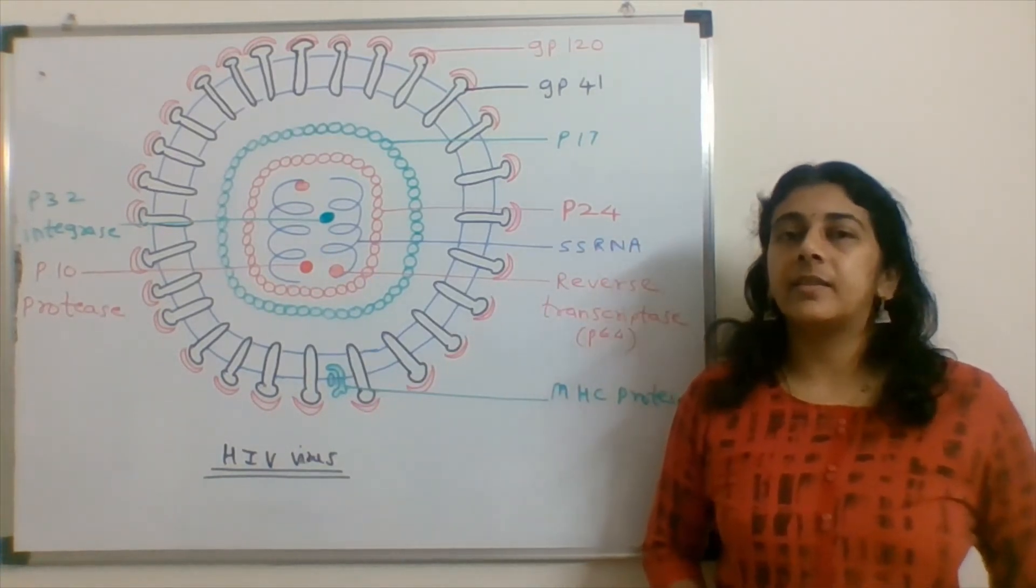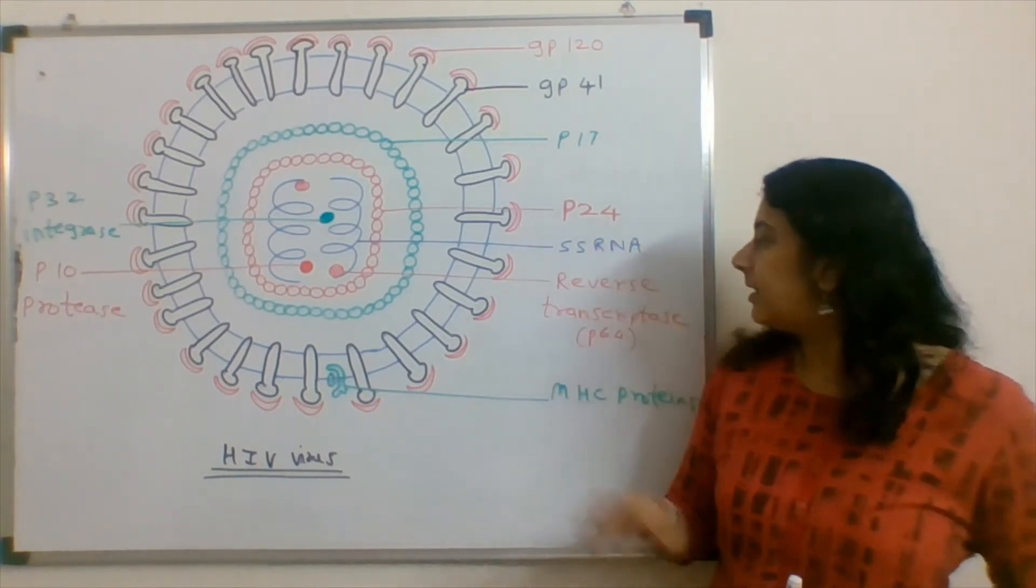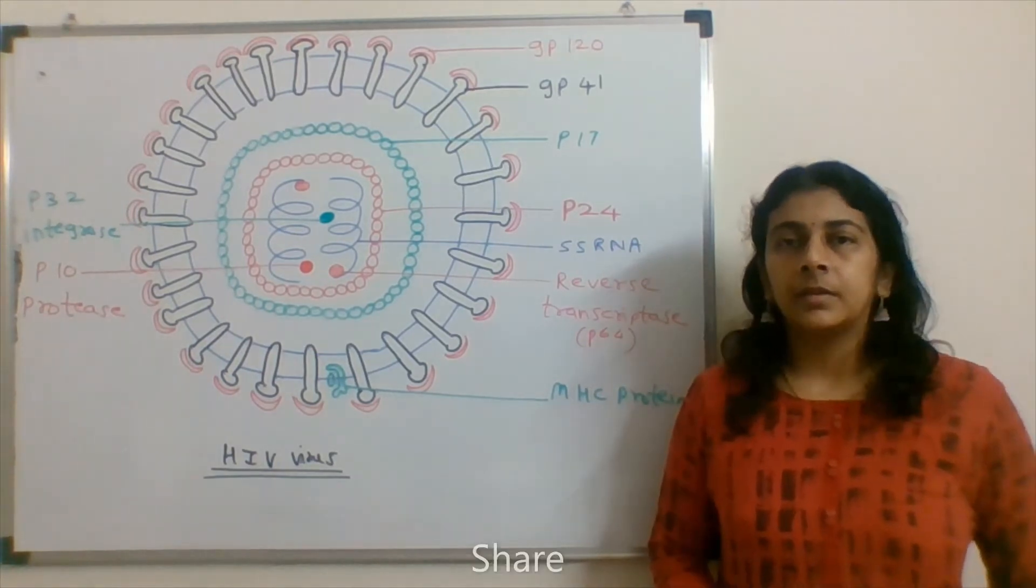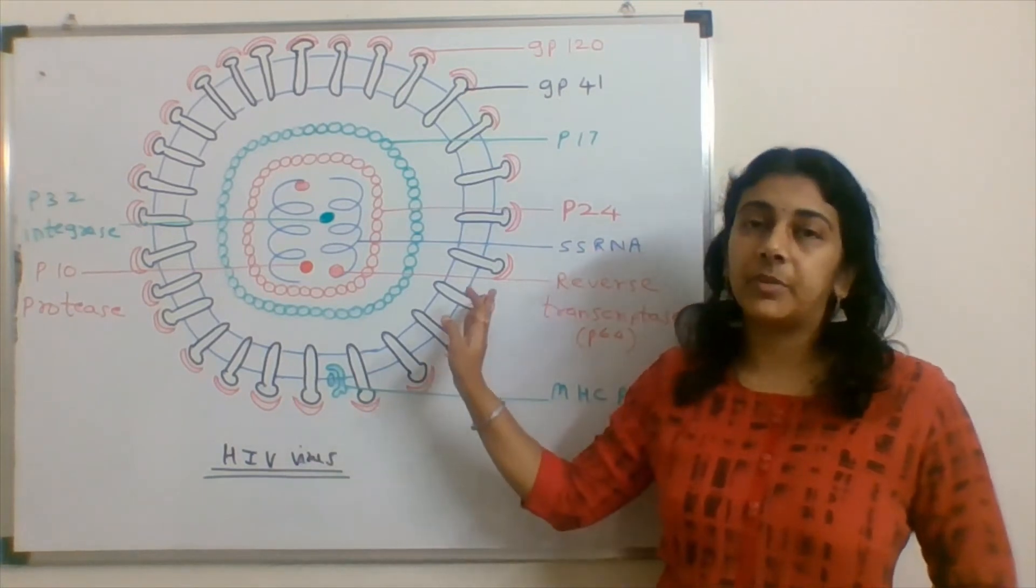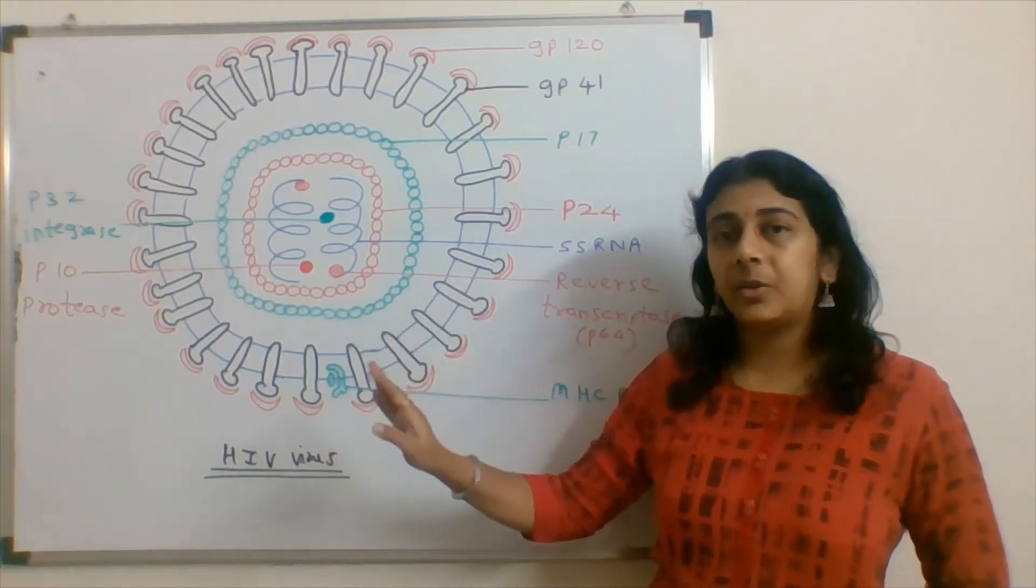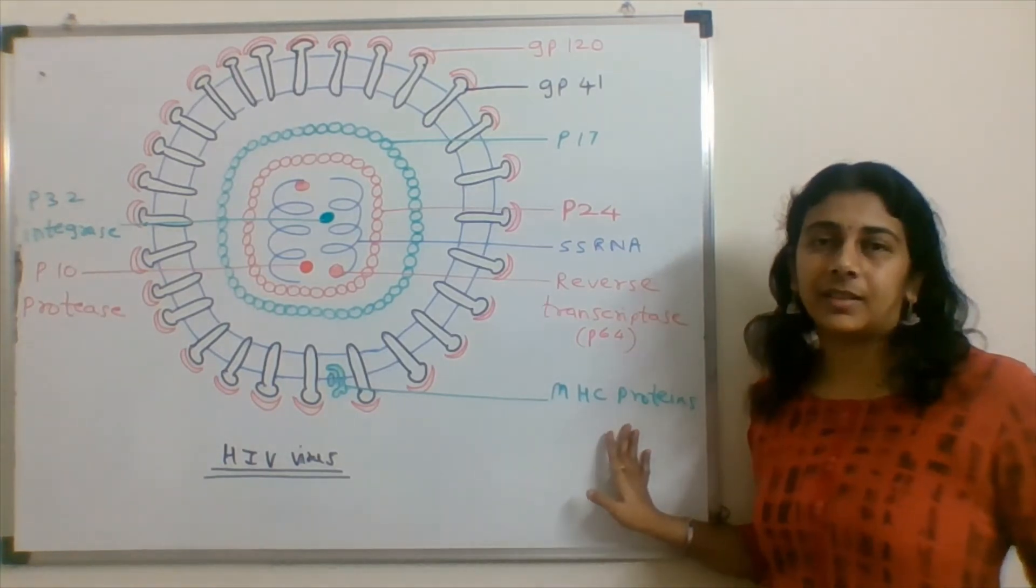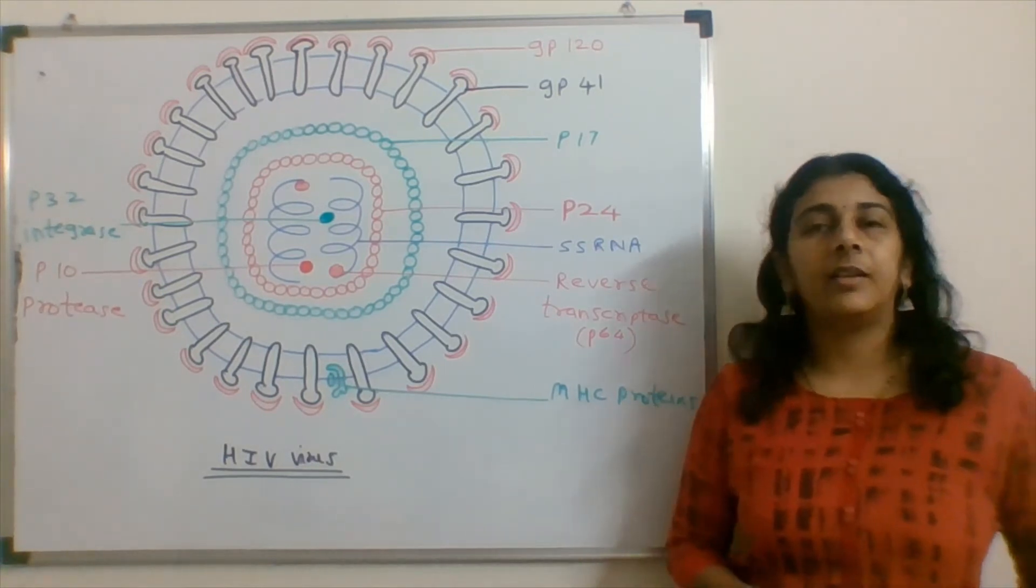So this virus is retrovirus family and it is having a reverse transcriptase in it. Now this viral envelope has derived from the host cell and due to this it is having MHC molecules on that. MHC proteins, MHC class 1 and MHC class 2 from the host cells.